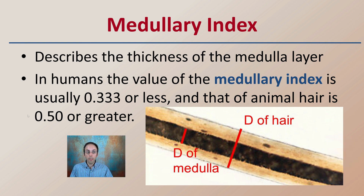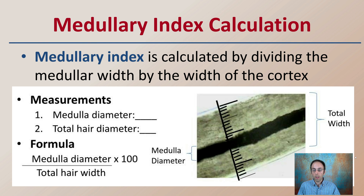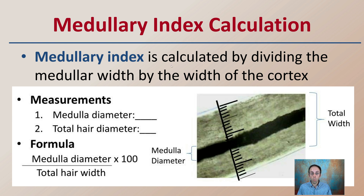The medullary index describes the thickness of the medulla layer. In humans, the value is usually about one-third or less, while in animal hair it is typically one-half or greater. It is calculated by dividing the medullary width by the width of the entire hair shaft, then multiplying by 100. This can be important for identification and classifying hair. Keep in mind this still falls under class evidence, not individual evidence, but is still important to document when developing comparisons of different animal hairs, as seen in the images in this presentation.